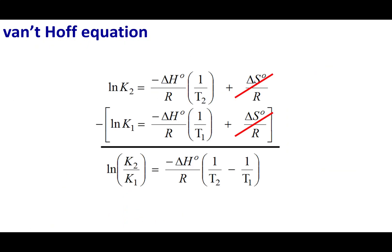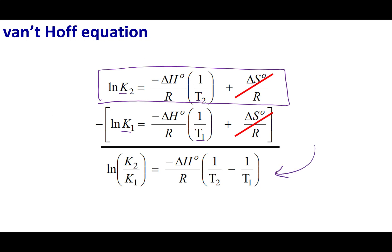Now let's talk about the Van't Hoff equation, which is derived from the equation we just discussed. I'm going to take that equation and measure K2, my equilibrium constant, and T2, the temperature at which I do the reaction. I'll do this again at a different temperature. If I subtract one equation from the other, I'm left with the Van't Hoff equation. The power of it is that if I do my reaction at a certain temperature and measure the equilibrium constant, I can predict the equilibrium constant at a different temperature, provided I know delta H.